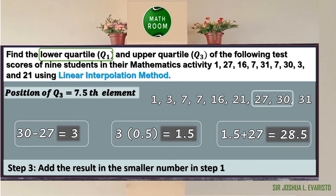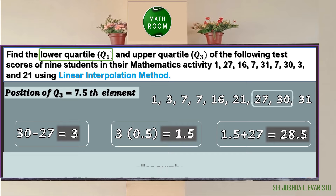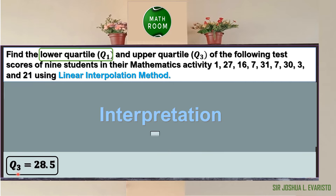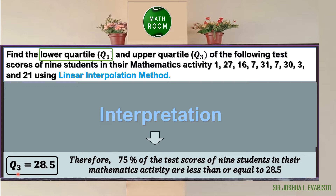Step 3: add the result to the smaller number — 1.5 + 27 = 28.5. Hence, using the linear interpolation method, Q sub 3 = 28.5. Since Q sub 3 equals 75%, 75% of the test scores of 9 students are less than or equal to 28.5.